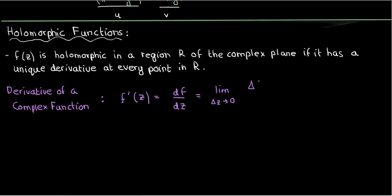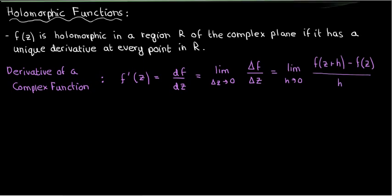It's the limit of delta f, which is a change in f, over delta z, which is a change in z, as delta z approaches zero. Now here's where the connection between real functions and complex functions starts coming up. For a complex function to be holomorphic or analytic or regular, whichever term you like to use, the conditions that need to be met are much more stringent than the conditions for real functions.